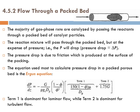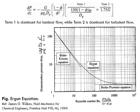The Ergun equation has two terms: term one is dominant for laminar flow and term two is dominant for turbulent flow, as seen from fluid mechanics. At very small Reynolds numbers (around 150) laminar dominates, and at large Reynolds numbers turbulent dominates with a coefficient of 1.75.